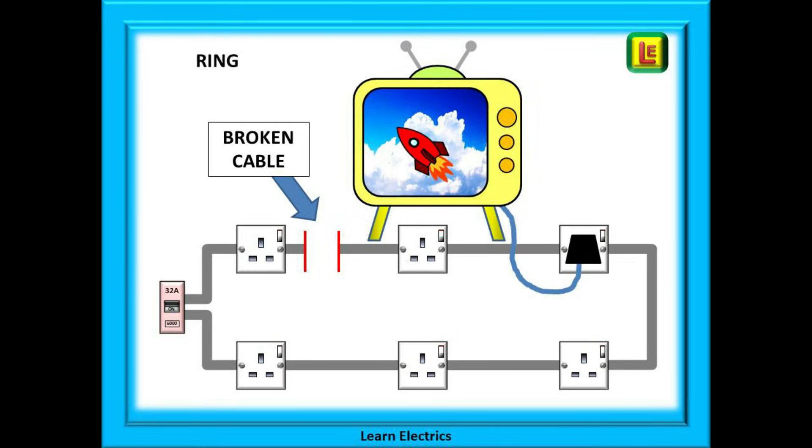If we now look at the ring circuit, there is a break in one leg of the circuit. But the television continues to work, so how is that? Because there are two paths for the current to flow, the television still receives an electrical supply along the unbroken leg. The customer will not know that the circuit is broken, and why should they? Everything is working.